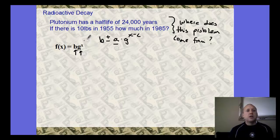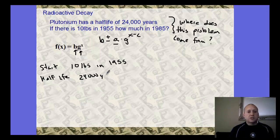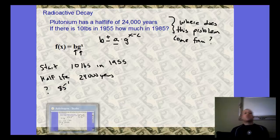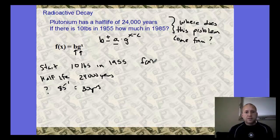So plutonium. We have a starting value. Whenever I do exponent functions, I always try to find the start. What's our starting value? Our starting value we had was 10 pounds, 10 pounds in 1955. We know that there's a half-life every 24,000 years. The question is, in 1985, how much would it be? That's 30 years. So 30 years have gone by.